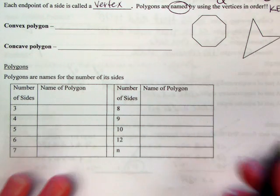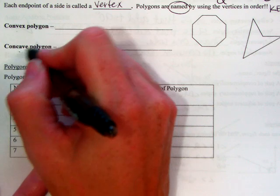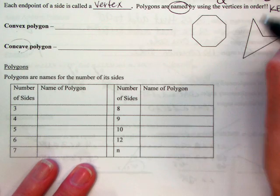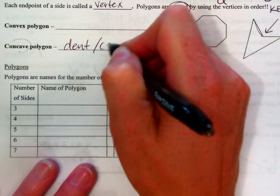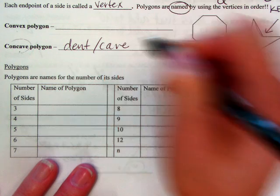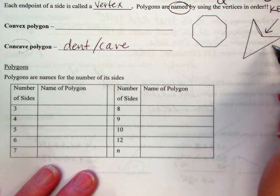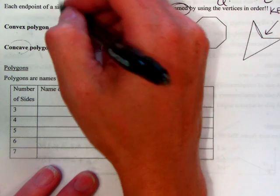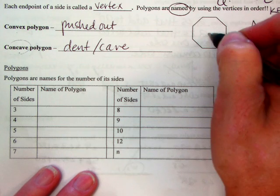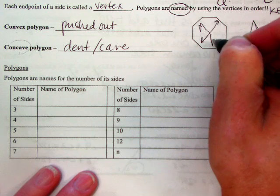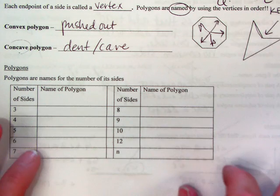Convex polygons — let me start with concave because that's the easy one to explain. Concave polygons kind of have a cave to them; they have a dent or a cave into the shape, and that's what makes them concave. Convex just means everything is pushed out — there's no caves, no space created into the shape.